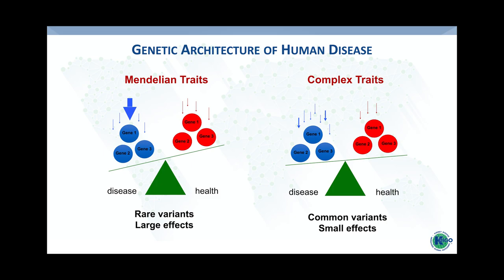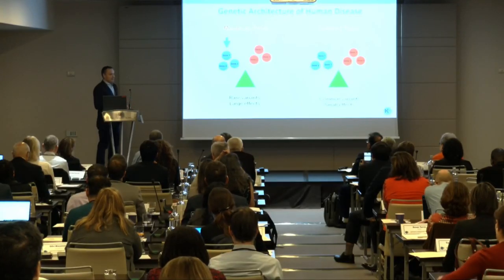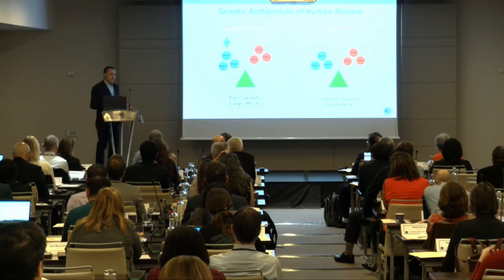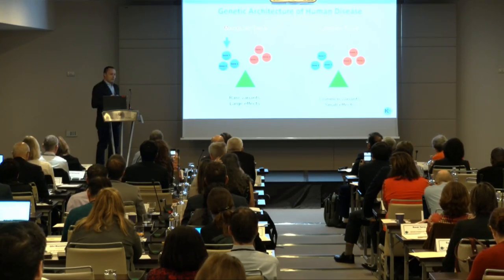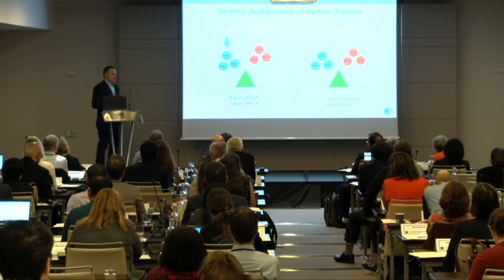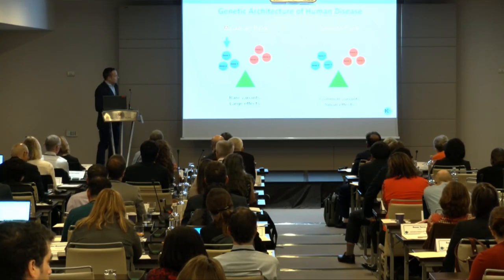However, with a recent generation of large datasets that contain both sequence data — for example, exome or genome sequencing — as well as array data, there is also an opportunity now to unify these models and look at the effects of polygenic background on the penetrance of monogenic disease as well as variable expressivity of monogenic disease.